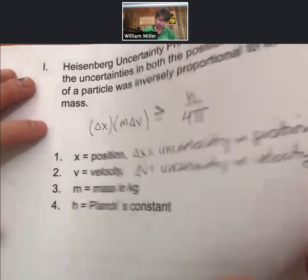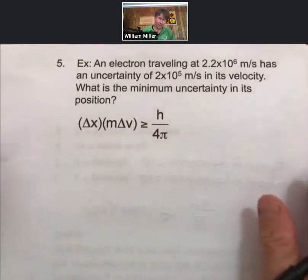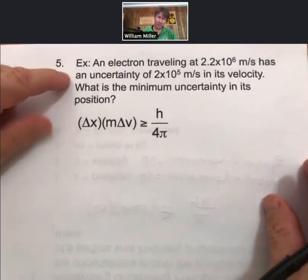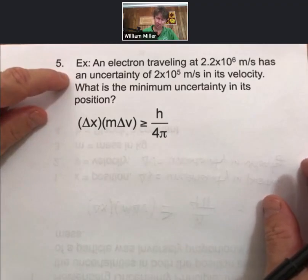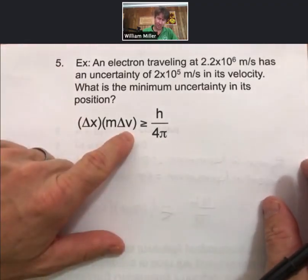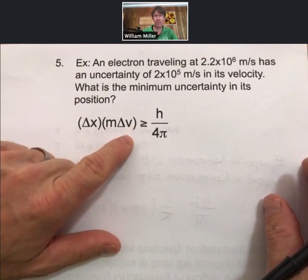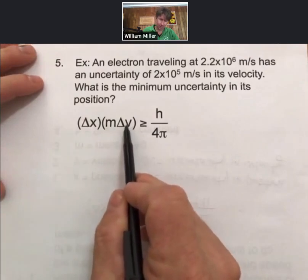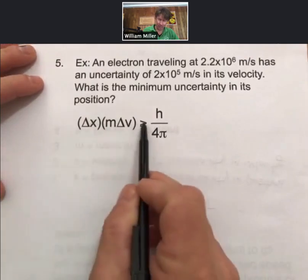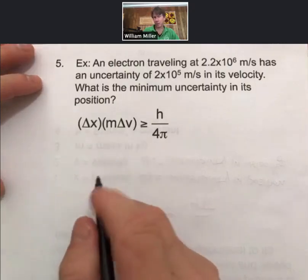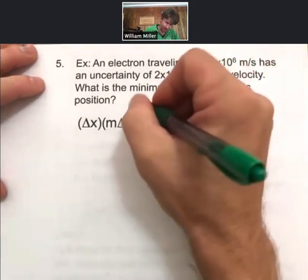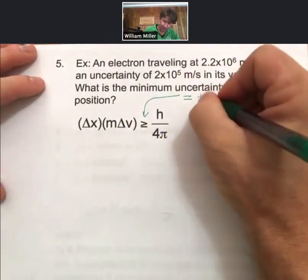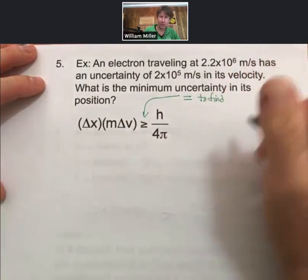And let's do a calculation with this. So an electron traveling at 2.2 times 10 to the 6 meters per second has an uncertainty of 2 times 10 to the minus 5 meters per second in its velocity. What is the minimum uncertainty in its position? So what it says is that if you know one uncertainty, that the other uncertainty has to be greater than or equal to. And if you want to find the minimum uncertainty, set it to an equal sign to find the minimum uncertainty.